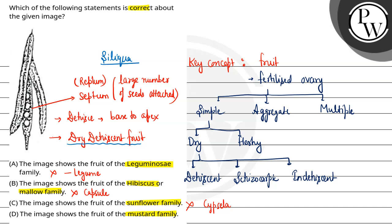Last option is: the image shows the fruit of the mustard family, so this option is correct. So the final answer here is Option D, that is the image shows the fruit of the mustard family. Hope you understood it well. Best of luck.